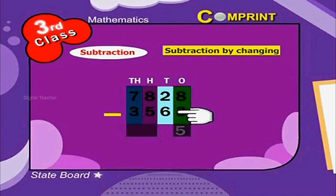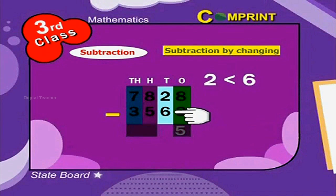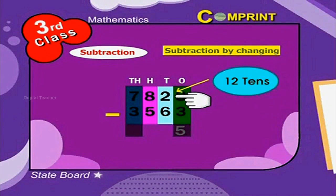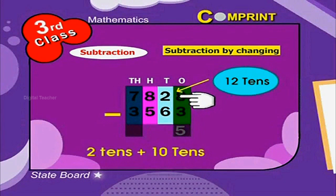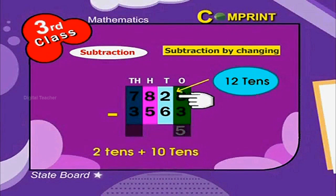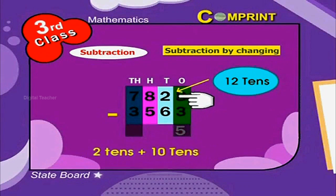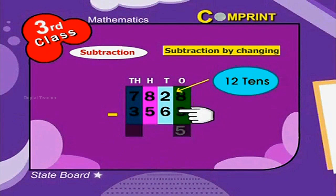Step 2: We cannot subtract 6 from 2 as 2 is smaller than 6. So, we borrow 1 hundred or 10 tens from 100's place. Thus, the value of 2 is 12. 2 tens plus 10 tens as borrowed from 100's, we get 12 tens. Now, let us subtract. 12 minus 6 becomes 6.